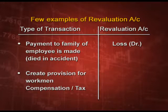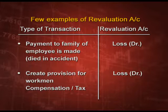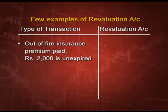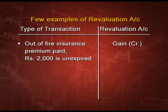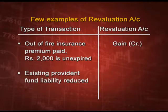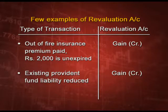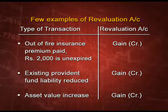If we have to create a provision for workman compensation or provision for tax, this is a loss — it will be debited in the revaluation account. If out of fire insurance premium paid, 2,000 is still unexpired, meaning prepaid, it is a gain and will be credited. Similarly, if an existing provident fund liability is reduced, it is our income — a gain — which will be credited. And if the asset value is increasing, it is again a gain and will be credited.